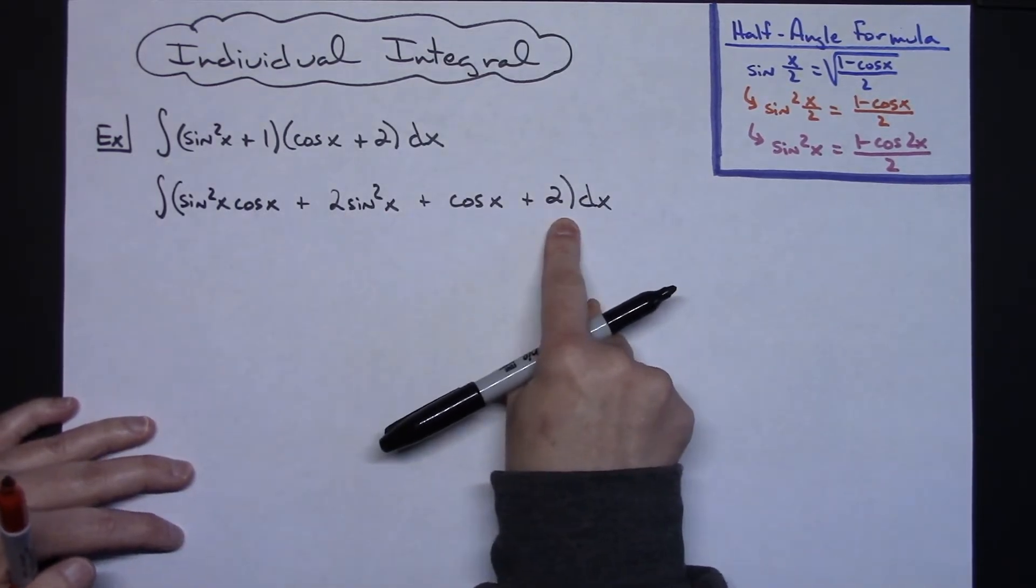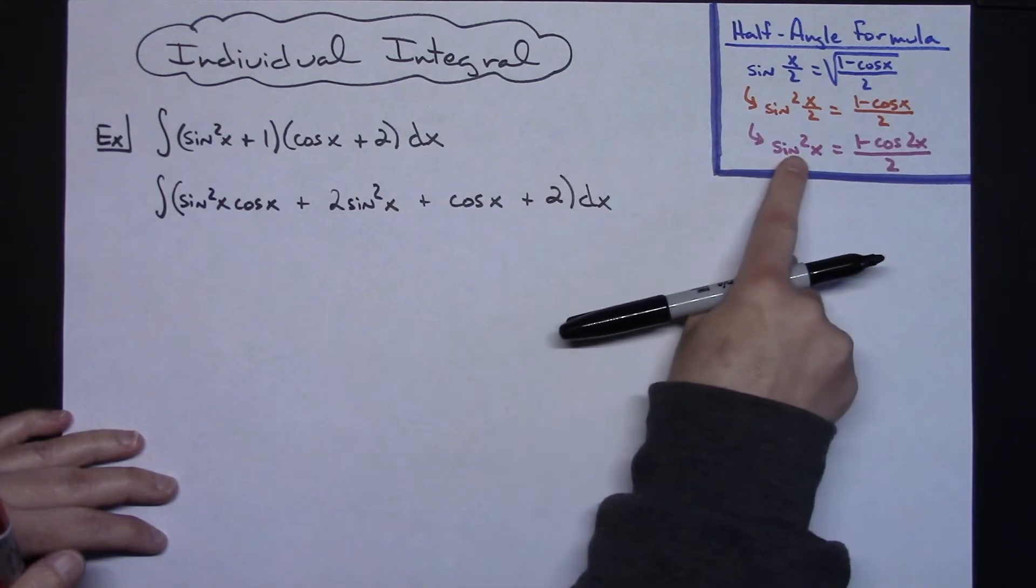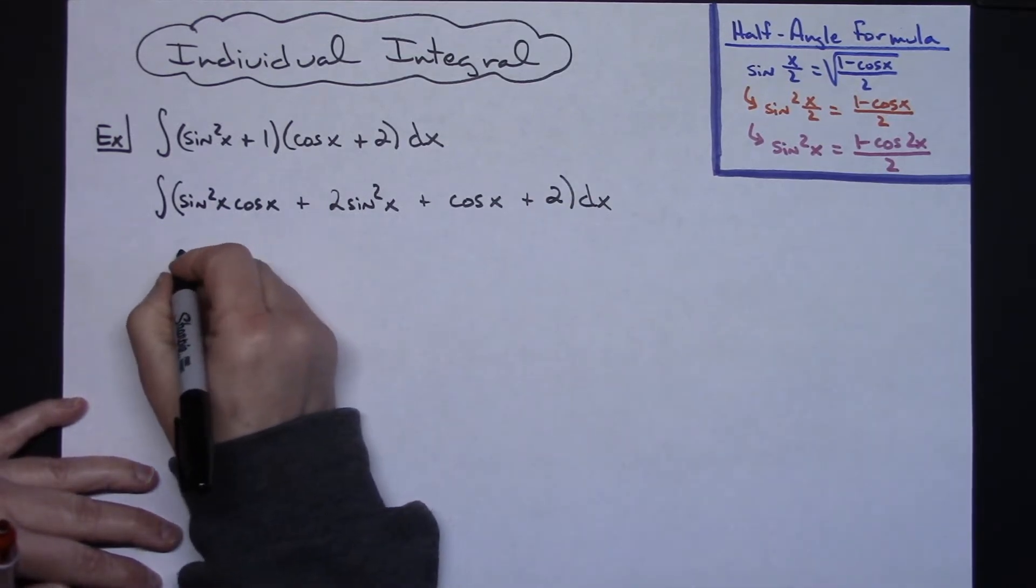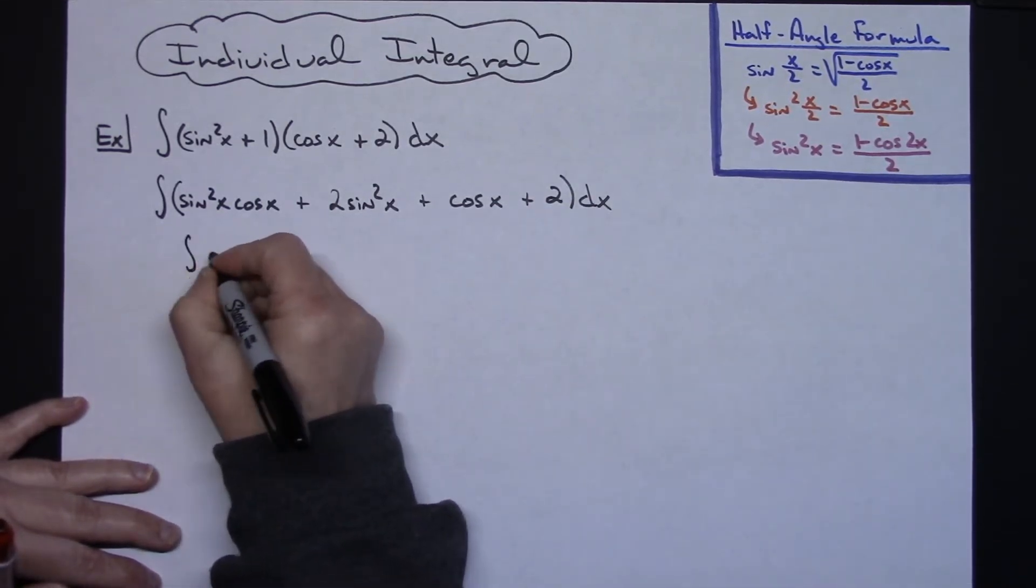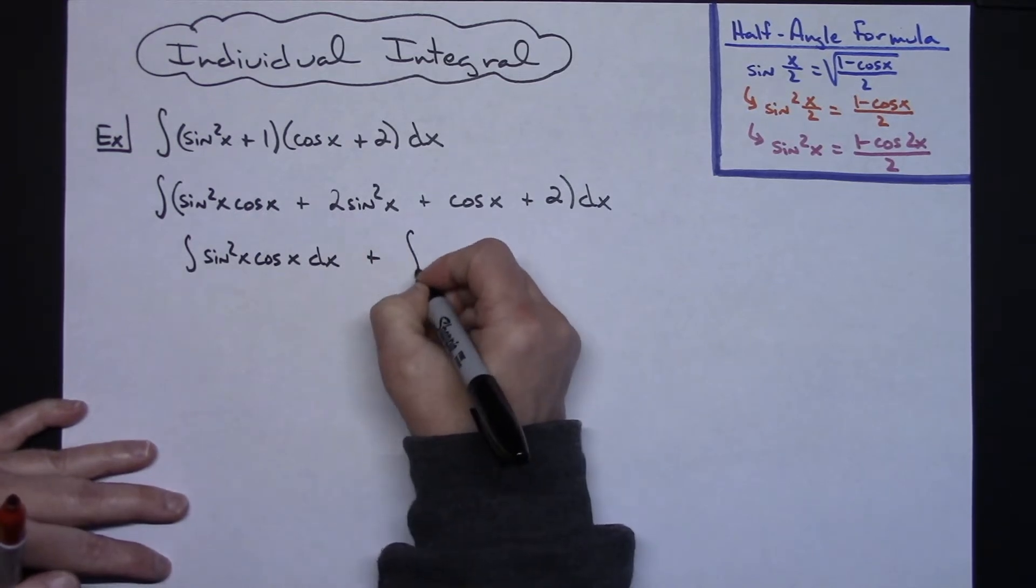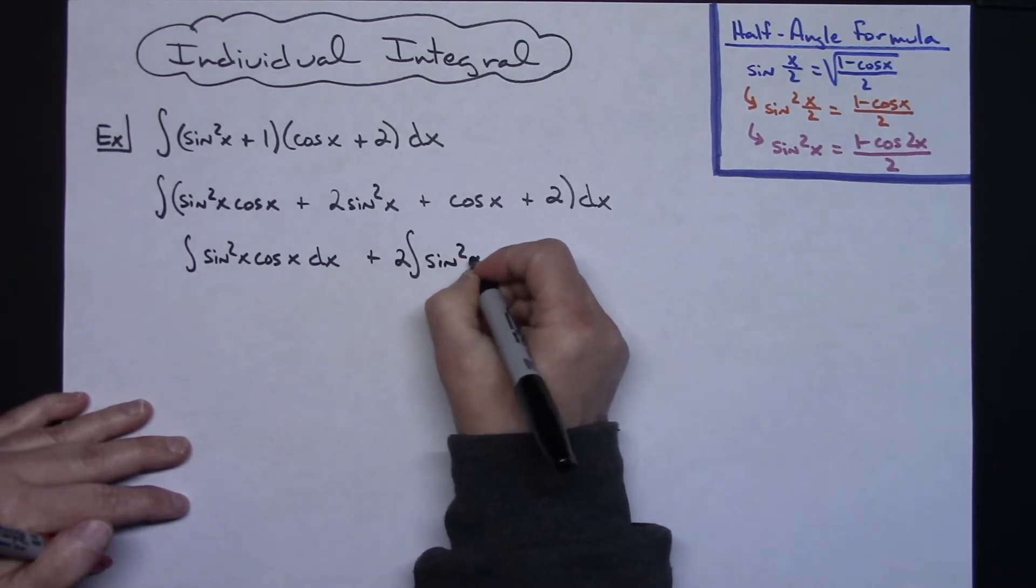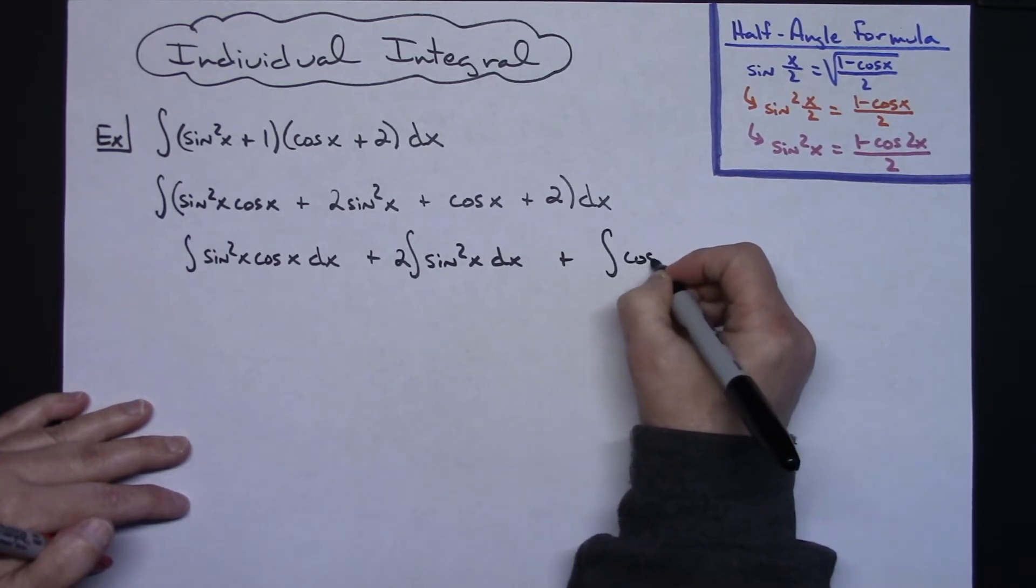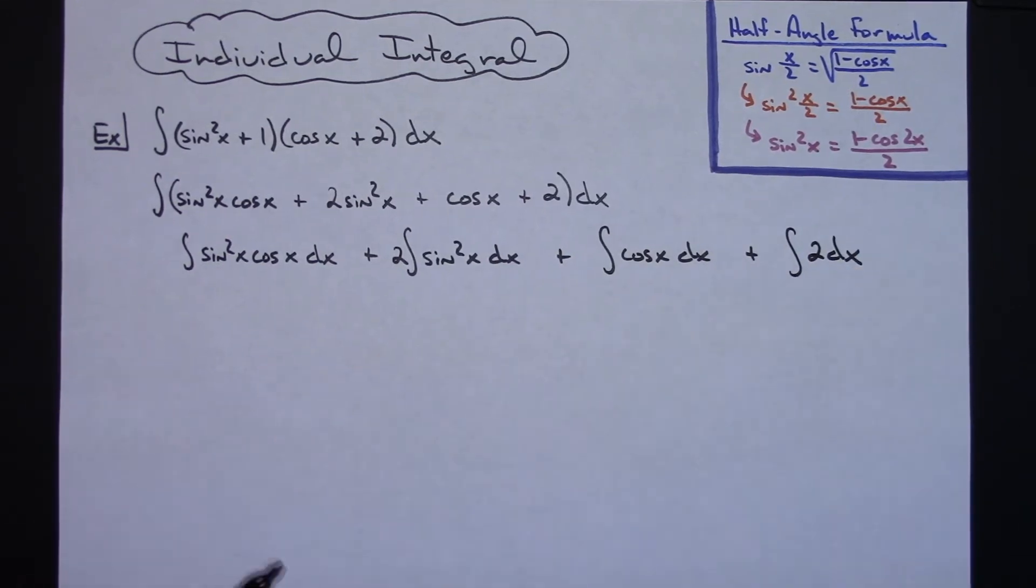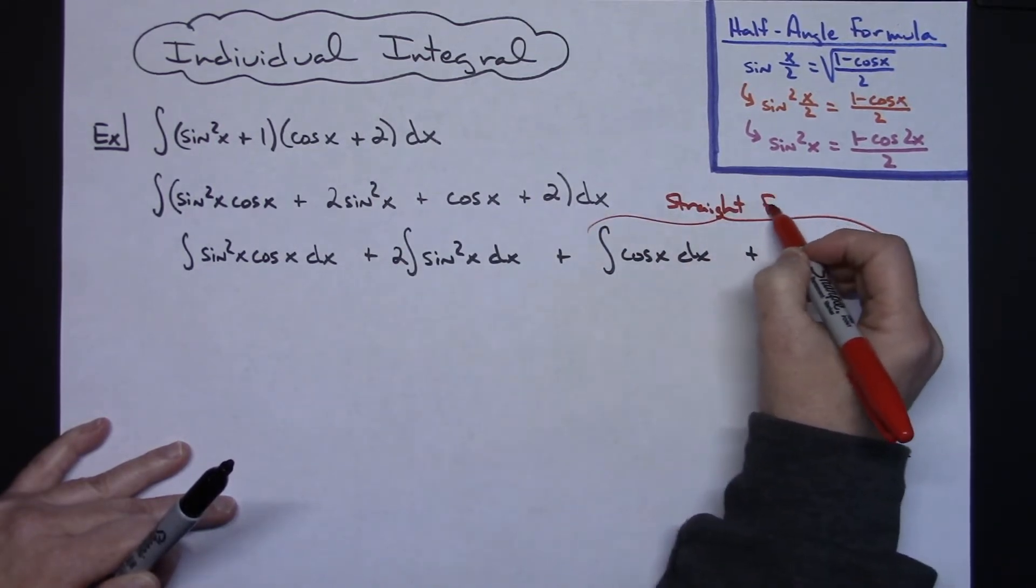Now I'm going to take a look at all four of those terms individually as integrals. These last two are going to turn out to be really simple. This is where I'm going to use the half angle substitution and this one's going to be a basic u substitution. So let's expand this out and write it as four separate integrals. We'll have the integral of sine squared x cosine x dx plus the integral of, I'm going to go ahead and pull that 2 out in front there, 2 sine squared x dx plus the integral cosine x dx plus the integral of 2 dx. So these are straightforward, not going to be a problem to do either one of those.